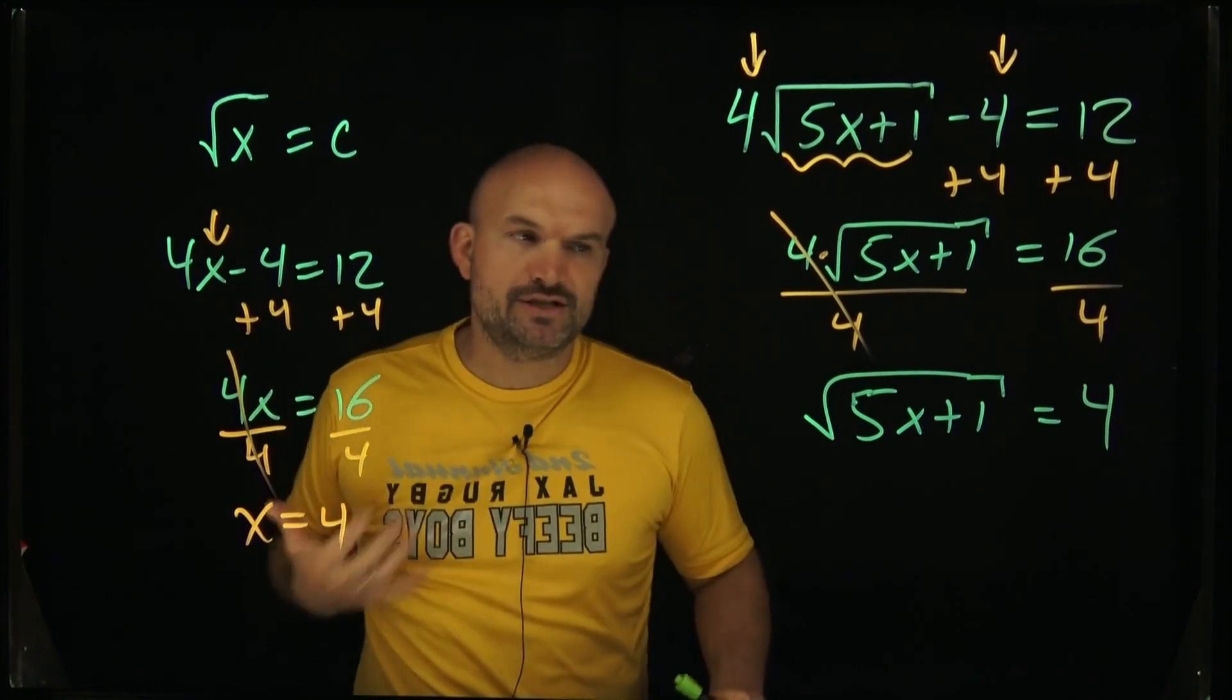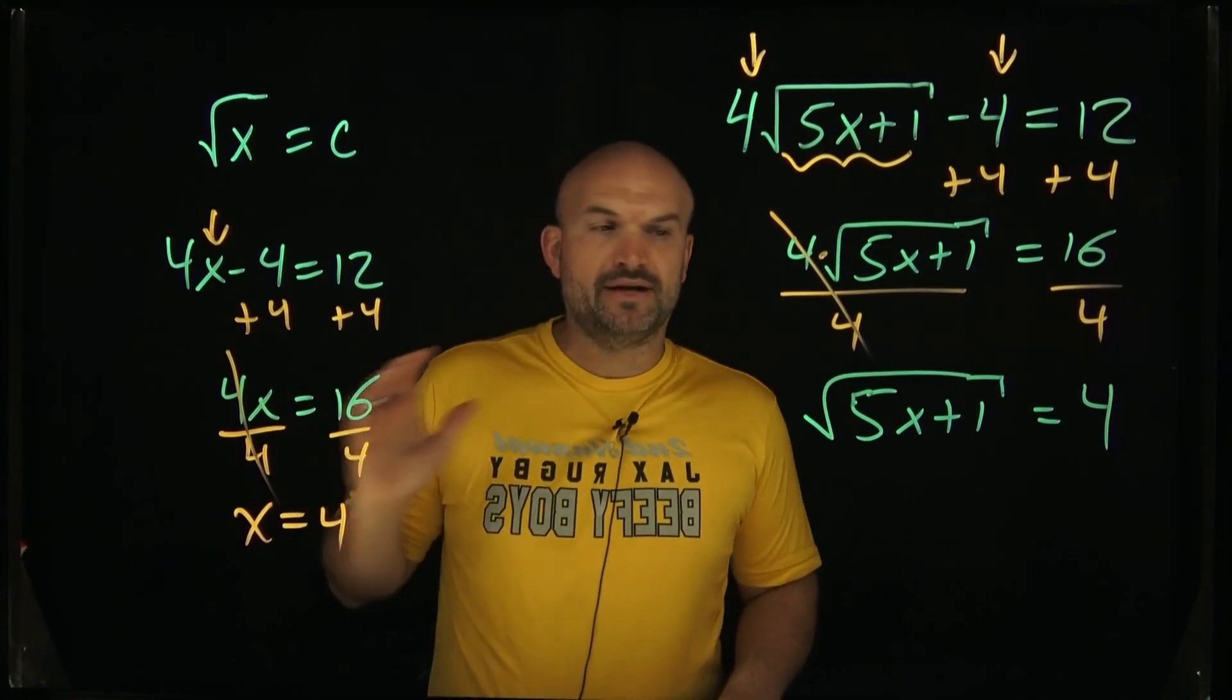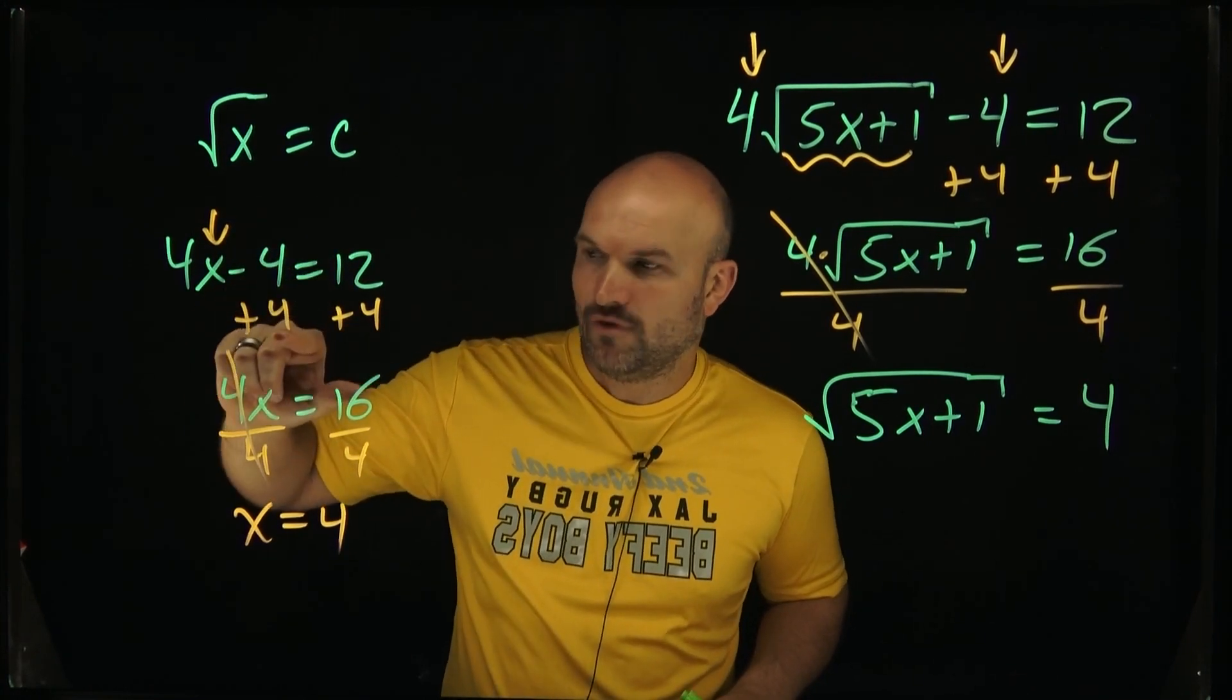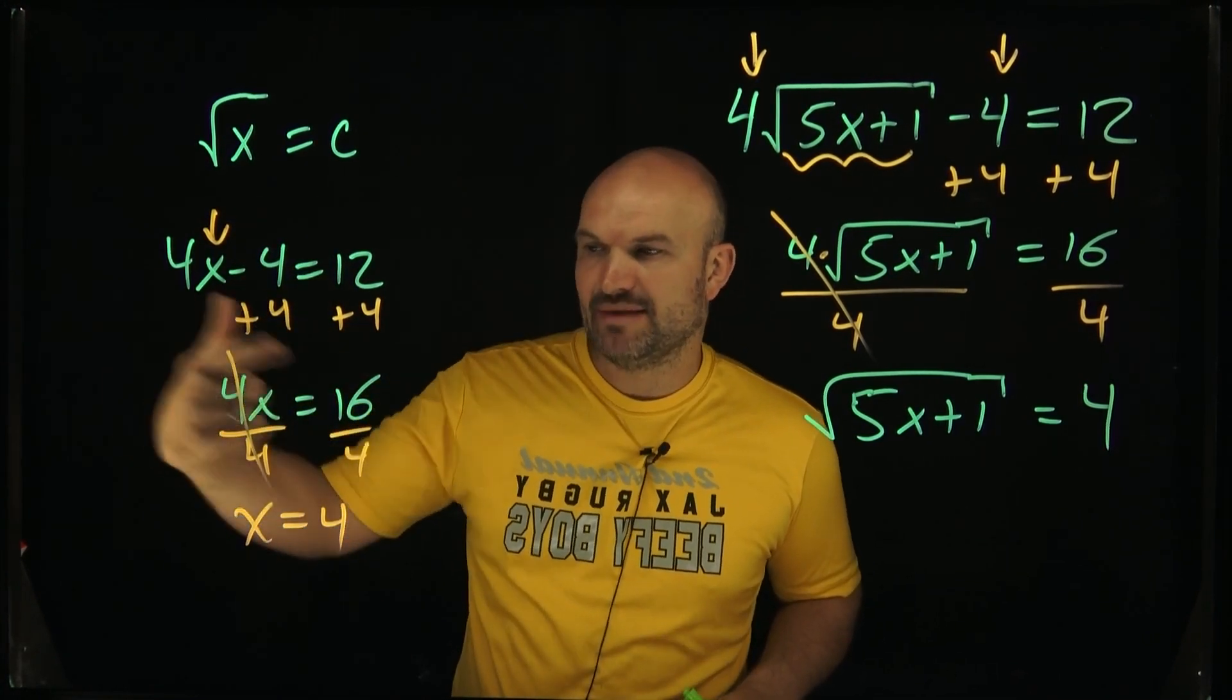So the reason is because we want to be able to get to using our inverse operations. We want to be able to undo the square root. And over here, we undid subtraction by adding 4. Over here, we undid multiplication by dividing by 4.